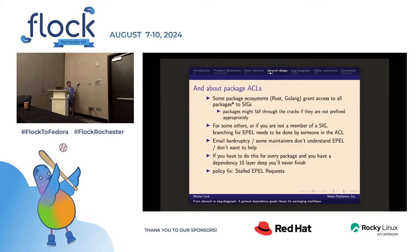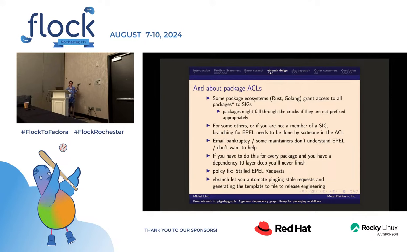We have a policy fix — not everything needs to be fixed in code. We have a process for dealing with stalled requests, so now it takes a maximum of three weeks if you remember to escalate when something is stalled. eBranch also has the ability to say, given this list of packages I'm trying to follow up on, hey, this one has been there for a week — it's time to follow up. It can ping Bugzilla on its own and spit out a template you can file to releng to say it's been three weeks and you want access to the package.